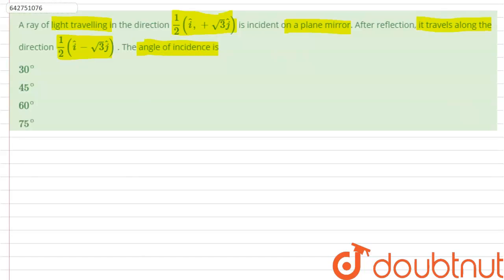As we know that after reflection, the only component of the direction of light changes which is perpendicular to the plane mirror. As we can see in the given values, the j component changes after reflection, so we can assume that direction of normal of plane mirror is along with j cap.